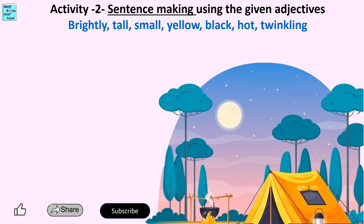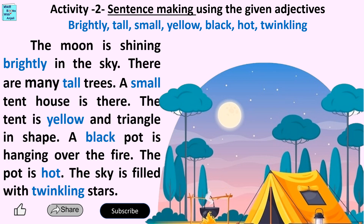The moon is shining brightly in the sky. There are many tall trees. A small tent house is there. The tent is yellow and triangle in shape.